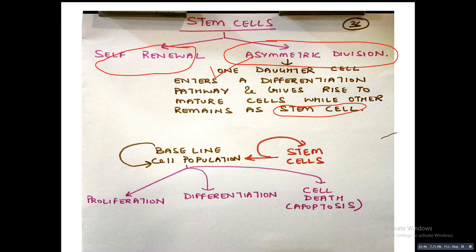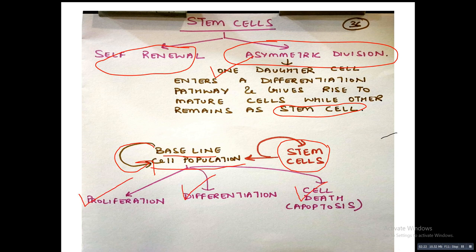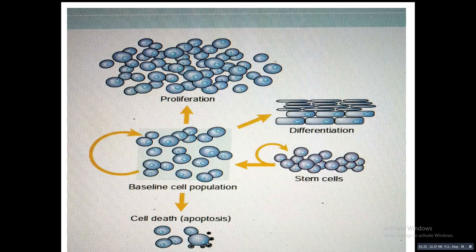The fate of stem cells: stem cells have the capacity for self-renewal — they can give rise to other stem cells or to a baseline cell population. This baseline cell population can again give rise to its own population, or it can enter differentiation pathways — it can undergo proliferation, differentiation, or cell death/apoptosis.